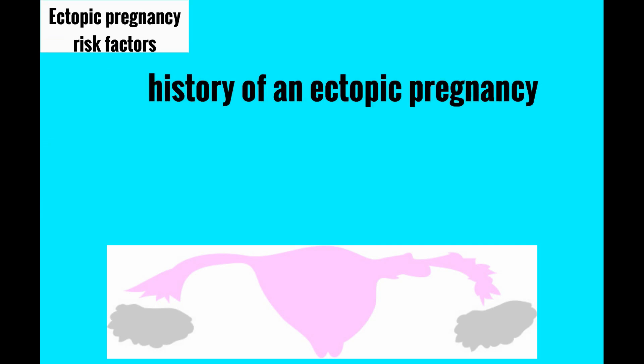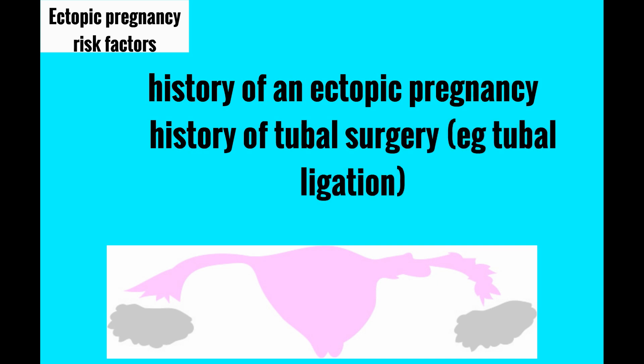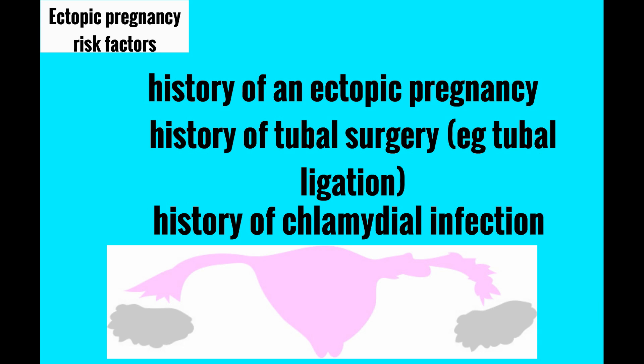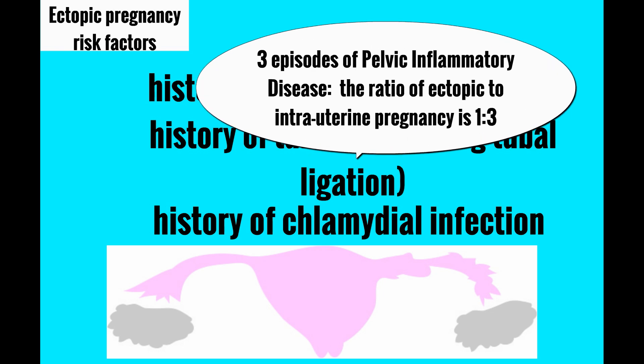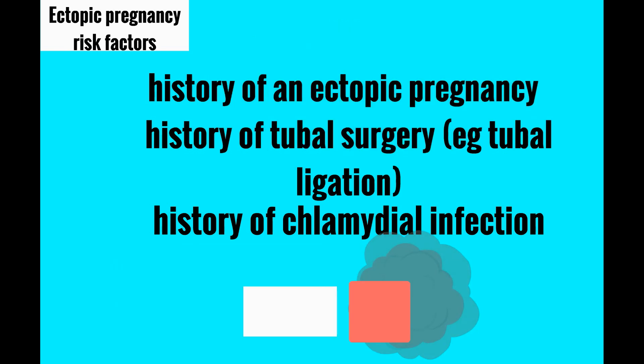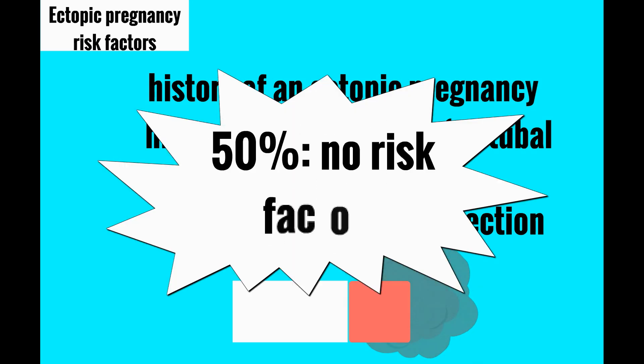Having a history of an ectopic pregnancy is the highest risk factor. Any other tubal surgery, such as a tubal ligation, also puts her at high risk. Chlamydial infection causes tubal scarring via intraluminal inflammation and subsequent fibrin deposition. If a patient has had three episodes of pelvic inflammatory disease, her ratio of ectopic to intrauterine pregnancy is one to three. Smoking is also a risk factor because it slows the cilia in the fallopian tube. However, 50 percent of patients with ectopic pregnancy will not have any risk factors.